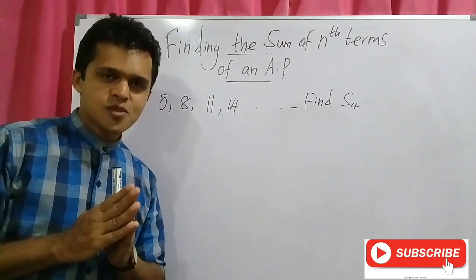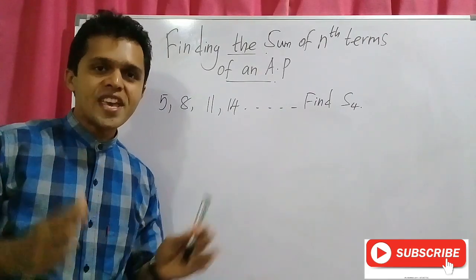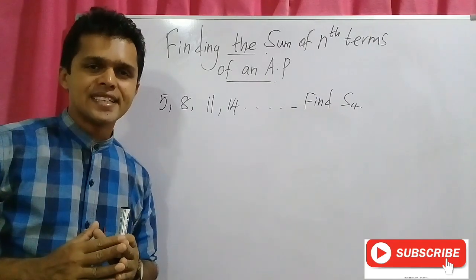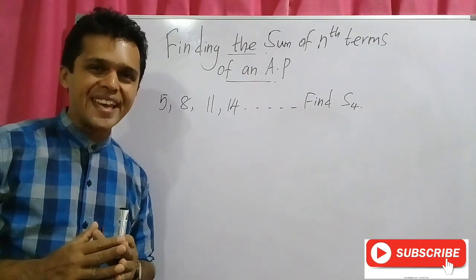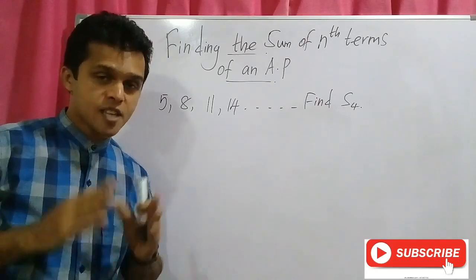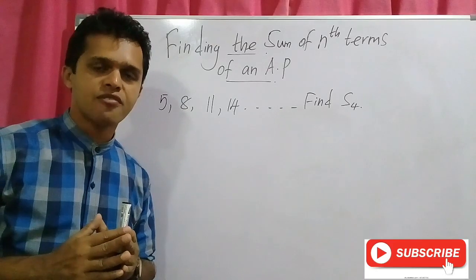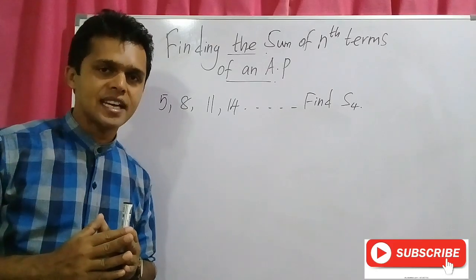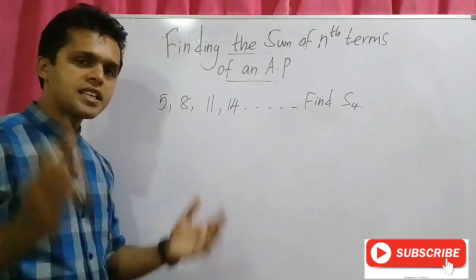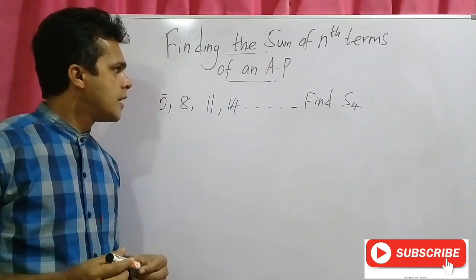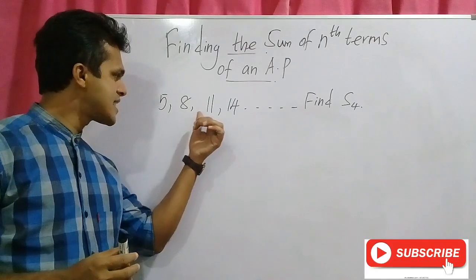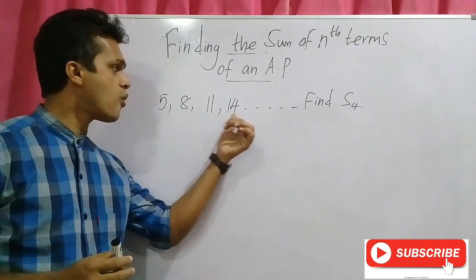Today we are going to learn about the sum of n terms of an AP. We have been given the arithmetic progression 5, 8, 11, and 14.